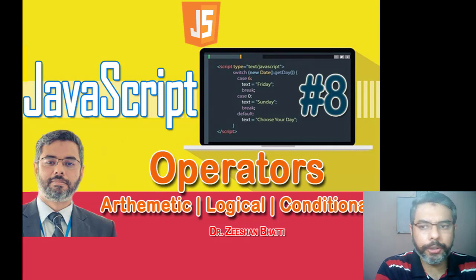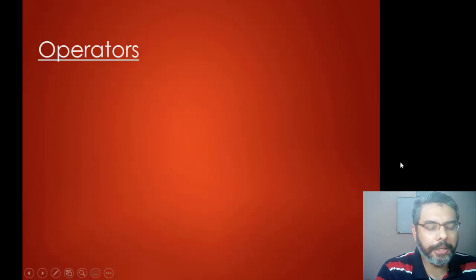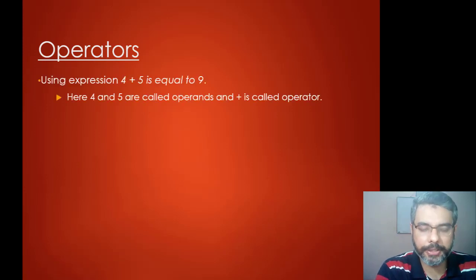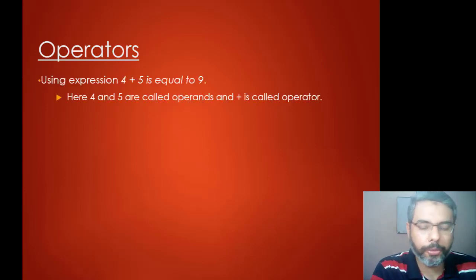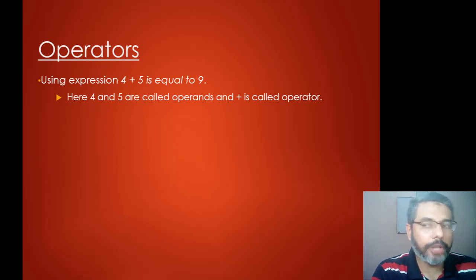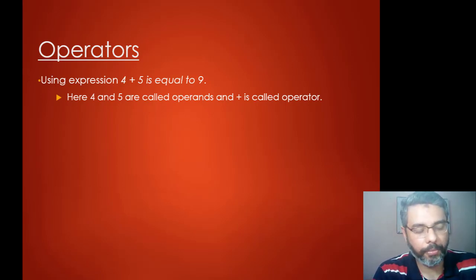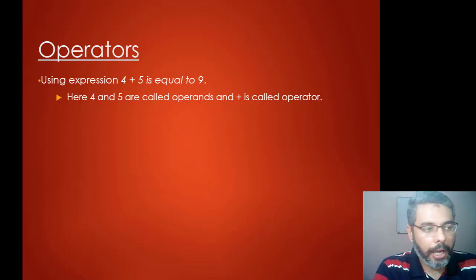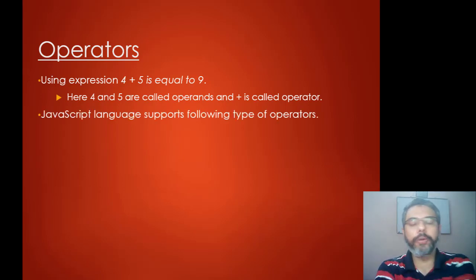When we talk about what we call operators, operators are basically symbols that allow us to perform a function on a certain expression. For example, using an expression like 4 plus 5 equals 9 — that's a simple expression. Here, 4 and 5 are known as operands, and plus is the operator.